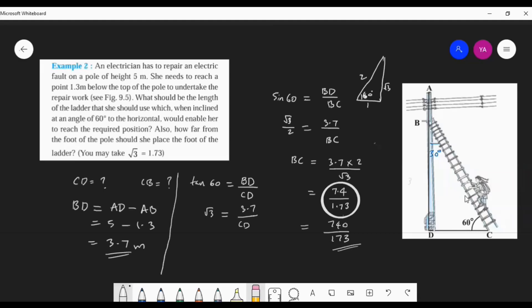BD we know, CD we don't know. We simplify for CD. So in next step, CD is equal to 3.7 by root 3. Yes, 1.7... the approximate value you can substitute.